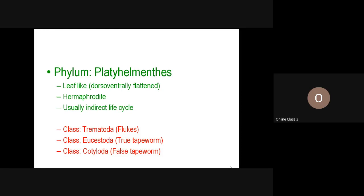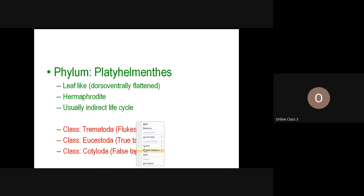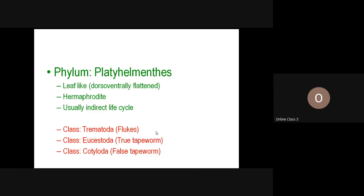The life cycle is usually indirect. Of course, there are some with direct life cycles like Monogenea, which we discussed in the previous class. Under Platyhelminthes we have three classes: Trematoda, which we have discussed, with two subclasses — Monogenea and Digenea.